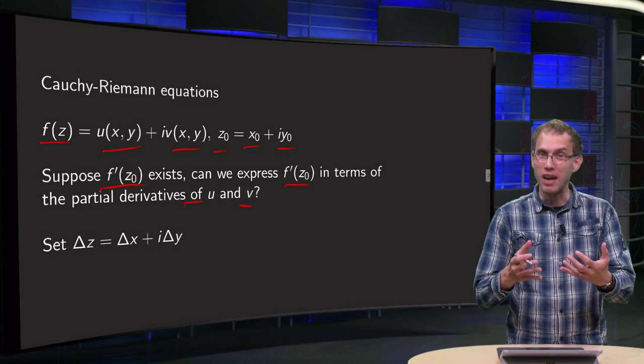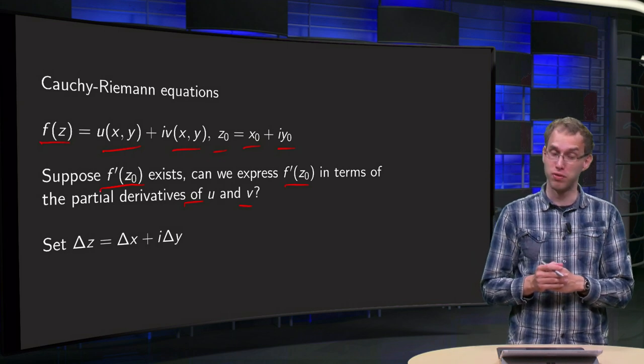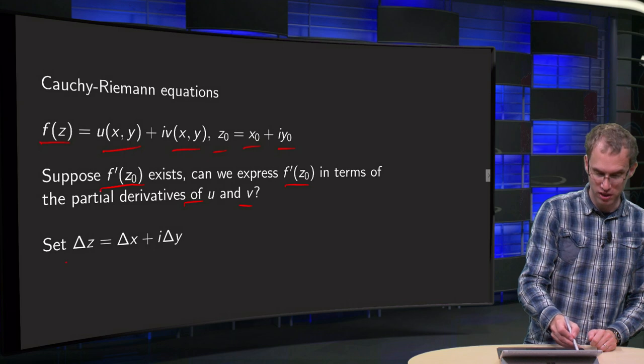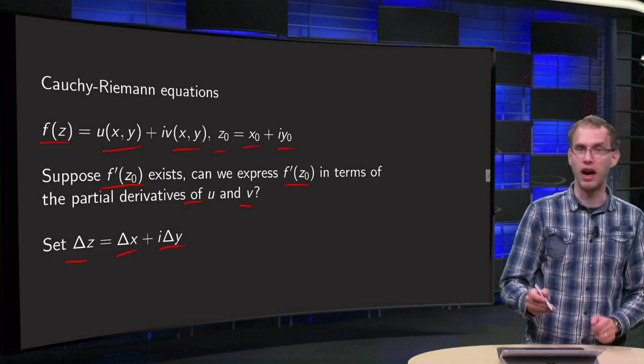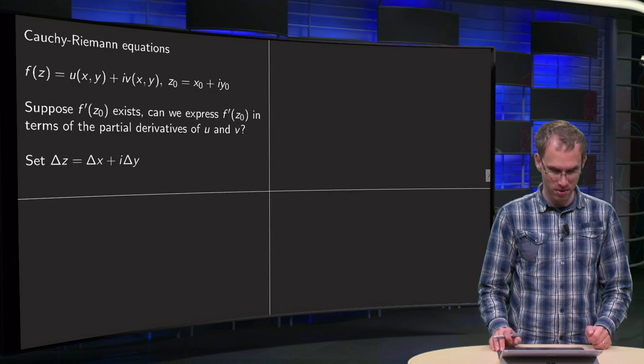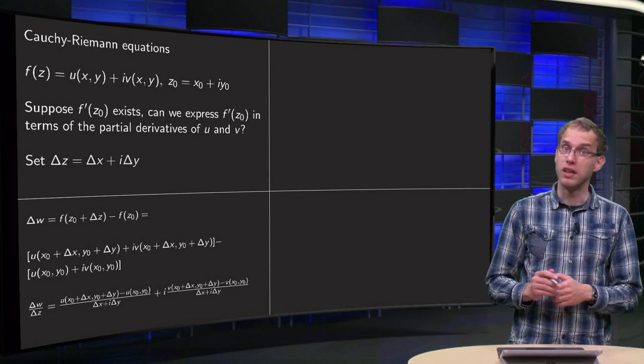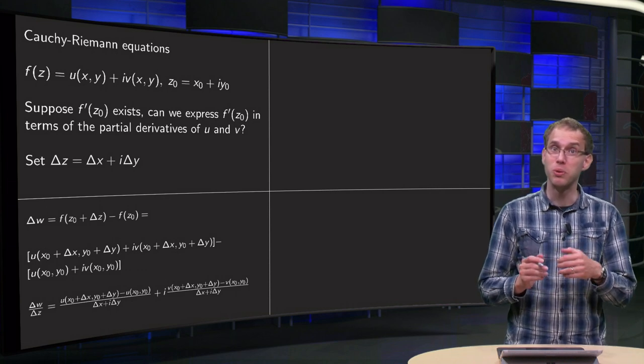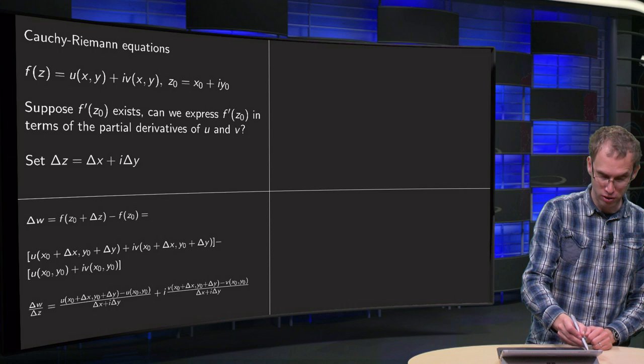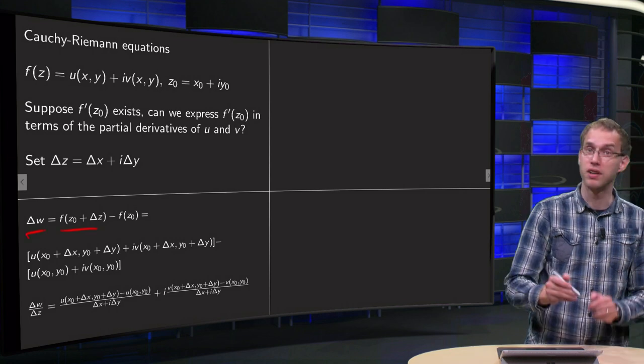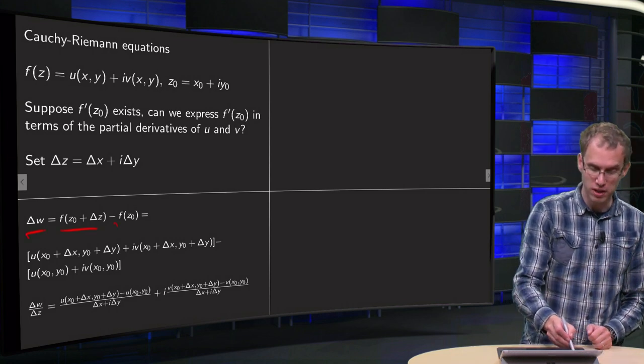This implies something for the partial derivatives of u and v. First of all we will set Δz equals Δx plus i times Δy. Now we can express Δw in terms of u and v. Δw equals f(z₀ + Δz) minus f(z₀).